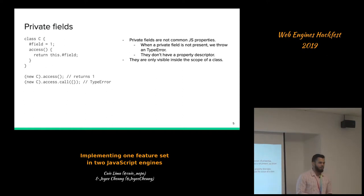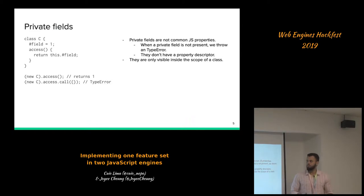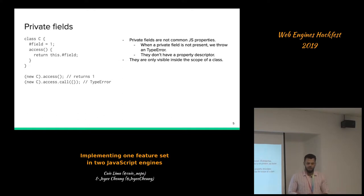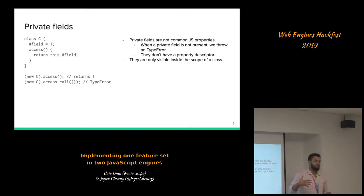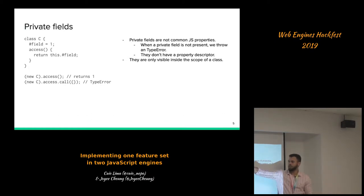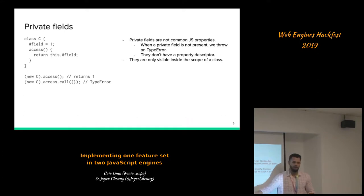We also have private fields. Private fields do not behave like a common property in JavaScript. They have a different naming convention — they start with a hash, like '#field' or '#index'. You are not able to access a private field outside the class scope. So if a line like 'return this.#field' is written outside the class lexical scope, it will throw a syntax error — the program doesn't even need to compile.